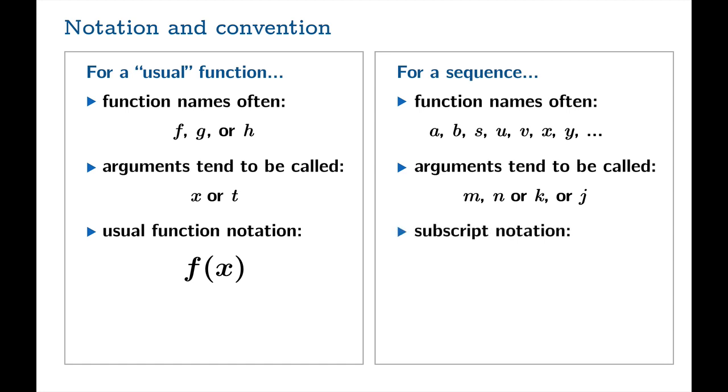And we use subscript notation. So instead of saying A of N, which would just be old school function notation, usually we say A sub N is how we read that. And so this subscript N is used to denote the value of the sequence at the argument N. Now, once in a while, you will see good old school function notation. For example, on the TI-84, your ability to enter a formula for a sequence uses basic function notation.